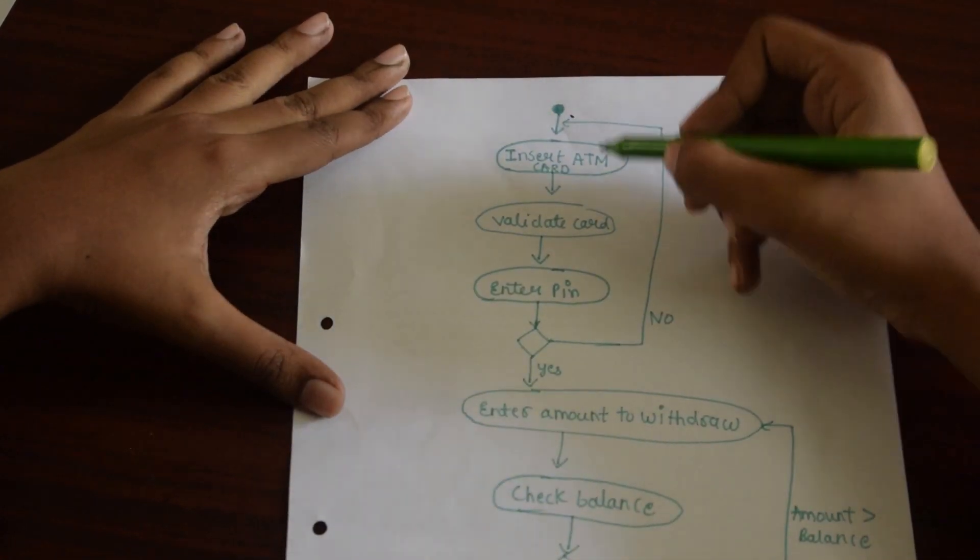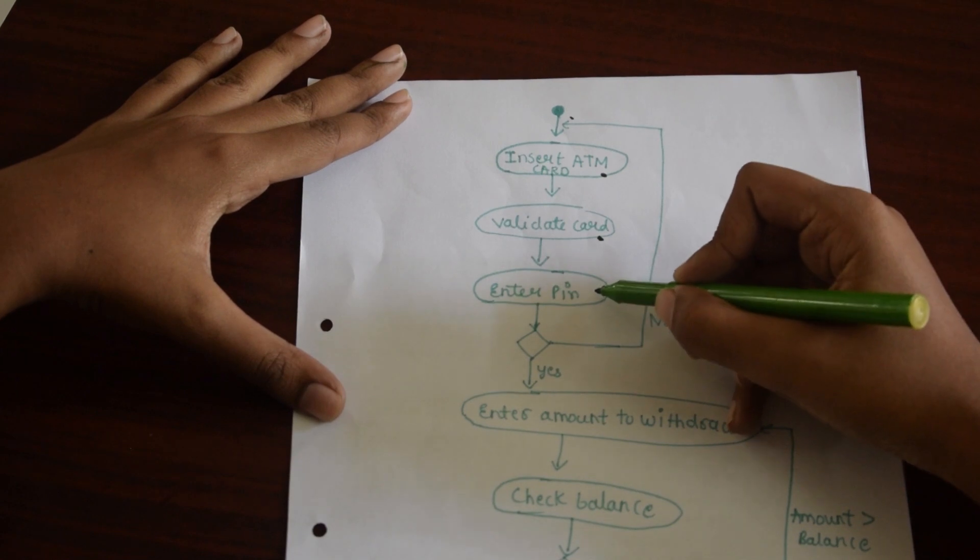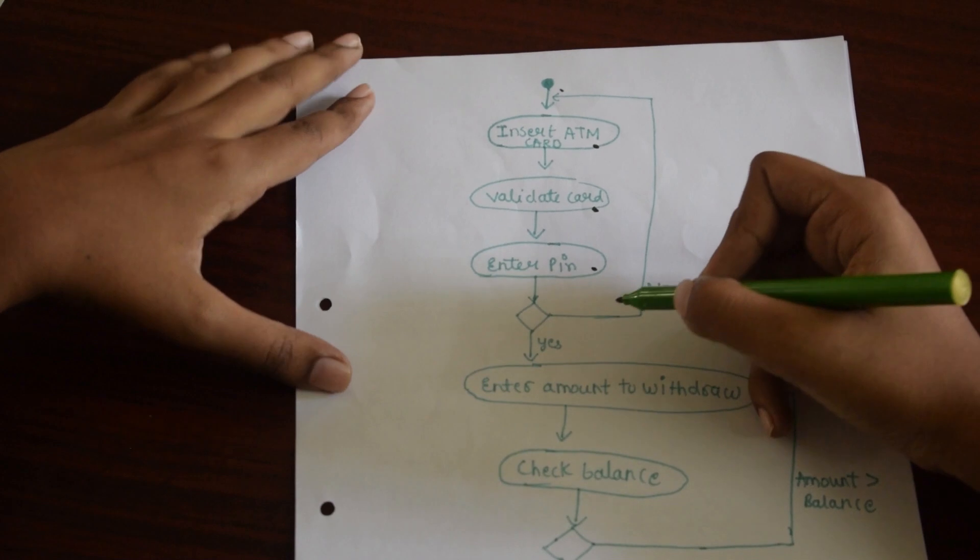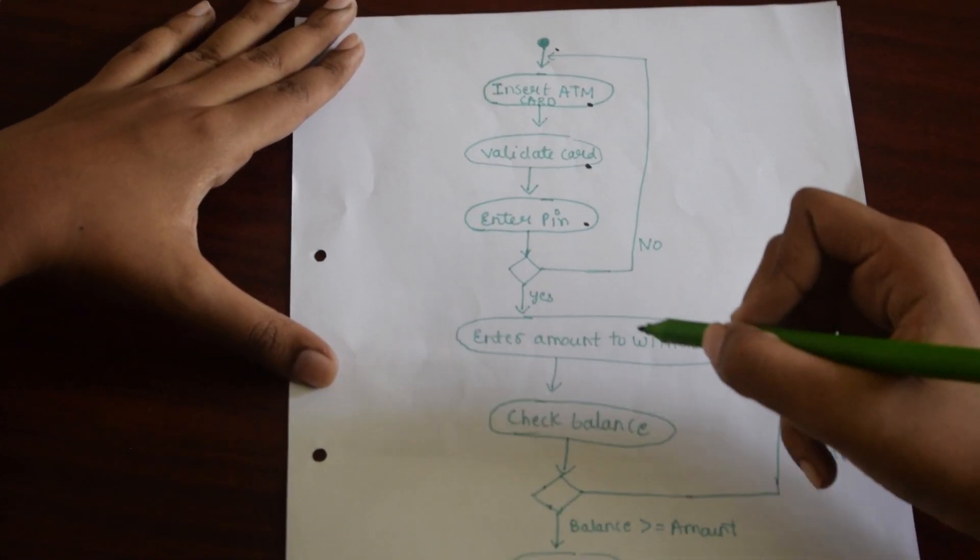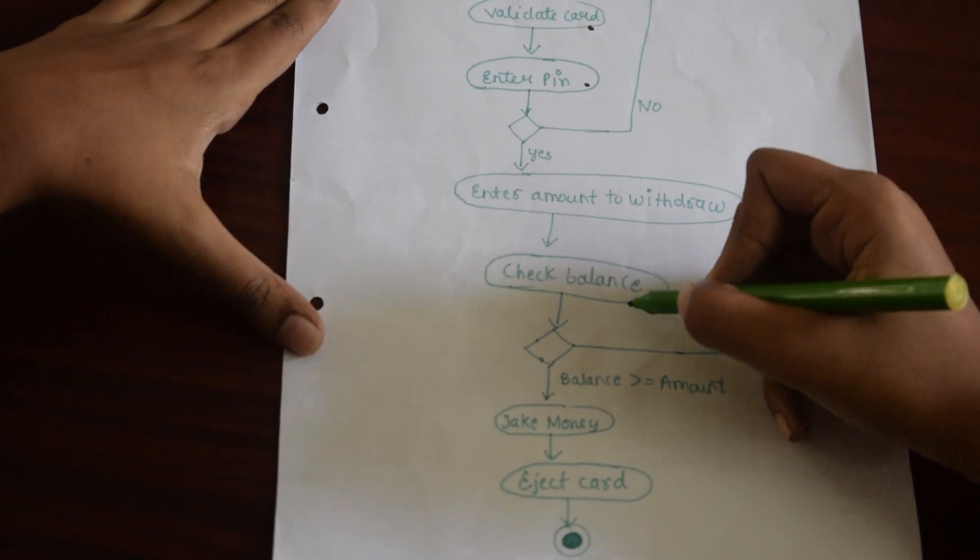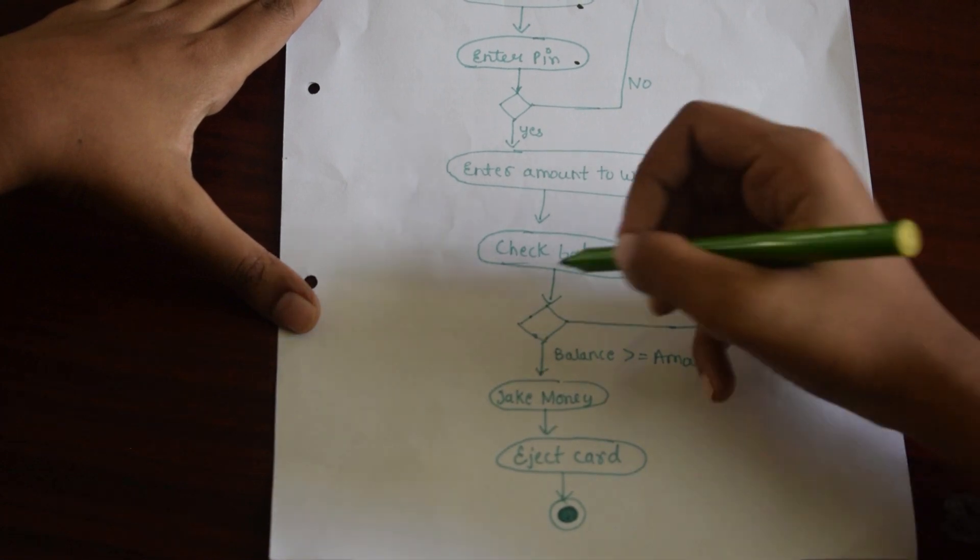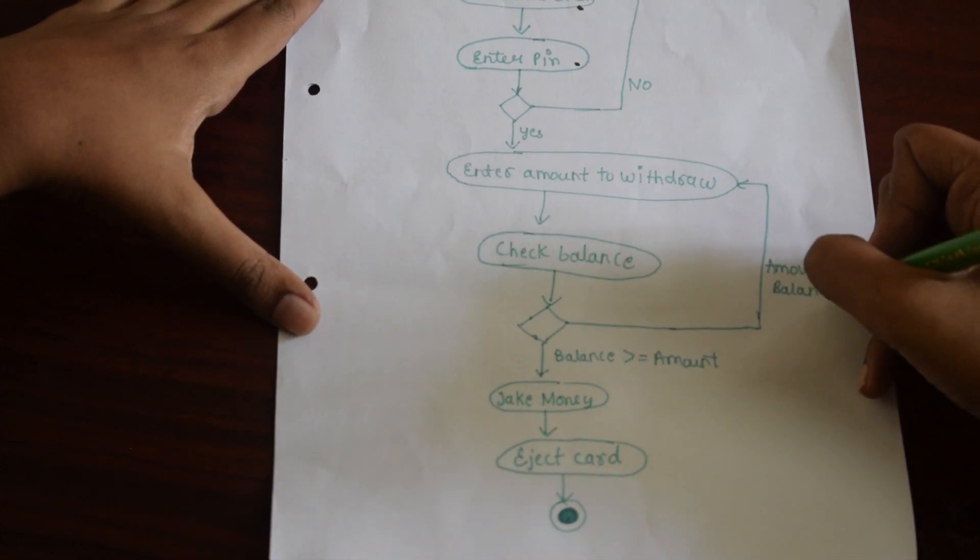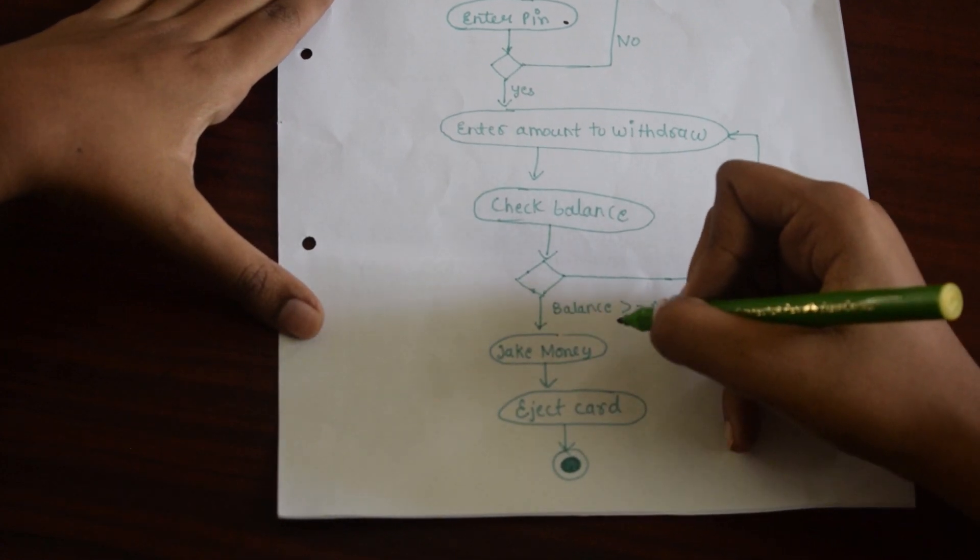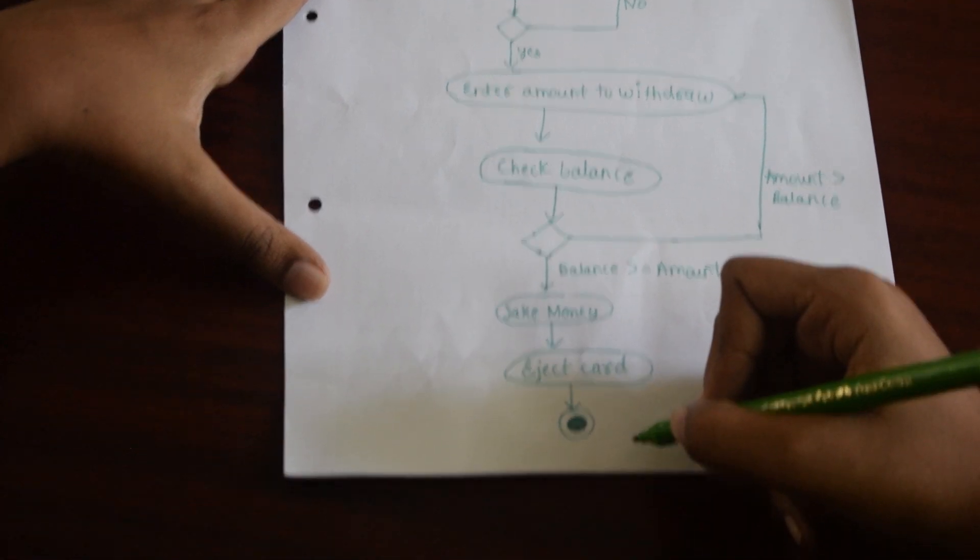Our activity starts when we insert the ATM card. The bank will validate it. Then we will enter the PIN. If it is an invalid PIN, then we need to start the process all over again. But if it is validated, then we will enter the amount we need to withdraw. Then the ATM machine will check the balance, whether the amount is greater or less than the balance in our account. If the amount is greater than balance, then we need to enter another amount. But if it is less than the balance in our account, then we will take our money, eject our card, and the process will end.